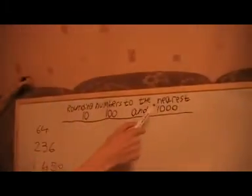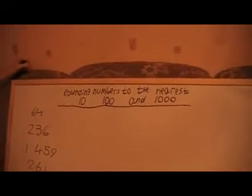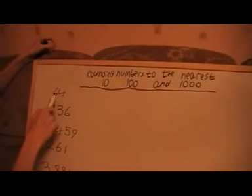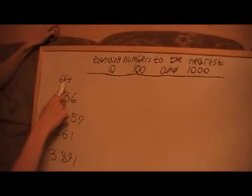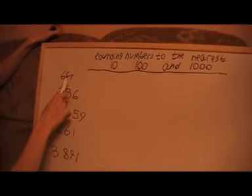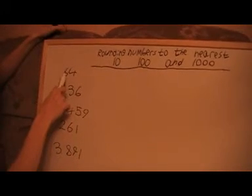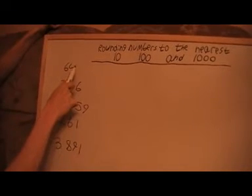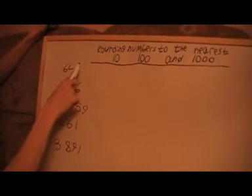In this video I want to talk about rounding numbers to the nearest ten, hundred, and thousand. When rounding to the nearest ten, look at the units digit. If it's five or more, round up, and if it's less than five, round down.